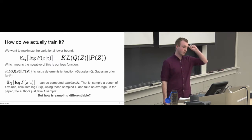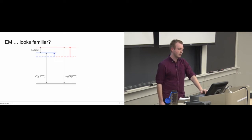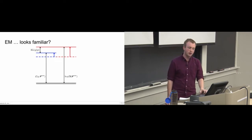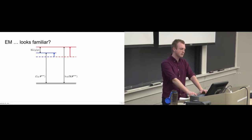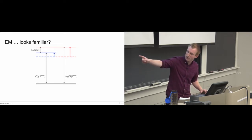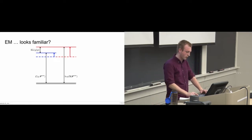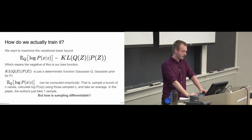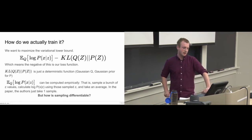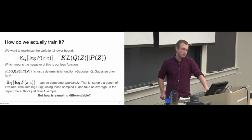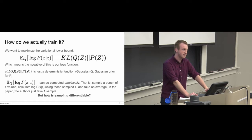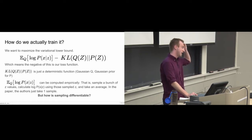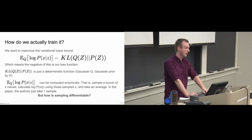This works out when the ELBO and KL divergence are quadratic, but it's not necessarily simple how we can do this in a neural network. The key challenge is the expectation over Q — the expectation can be computed empirically using Monte Carlo sampling, but how can we make this differentiable? Especially in a neural network, if you have a stochastic sampling operation — this is where the reparameterization trick comes in.